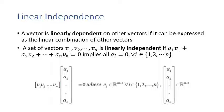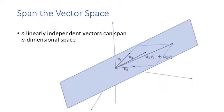In other words, vectors v1 through vn are linearly independent if and only if the only solution to their linear combination equaling zero is that all parameters a_i are zero. For example, the standard basis vectors of a 3D coordinate space are linearly independent because the only linear combination that equals zero requires all parameters to be zero.